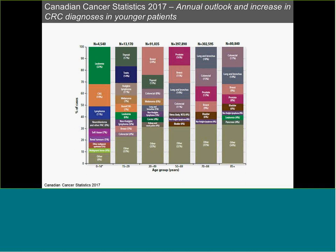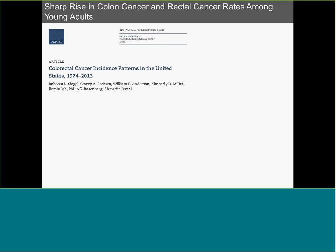One thing we've observed is a rise in colorectal cancer in younger patients. Looking at a graph representing the percent of cases for all malignancies per age group, colorectal cancer is the largest proportion in the 85-plus age group and starts to be in the double-digit range at 50 years of age. But there is also a not insubstantial amount of colorectal cancer being diagnosed in patients as young as 15 to 29 and 30 to 49.